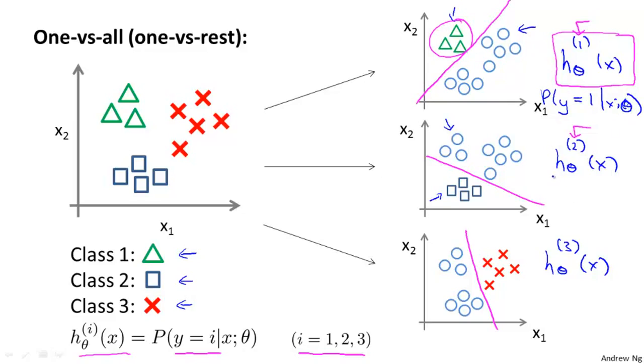And similarly, this is treating the square class as a positive class, and so it's trying to estimate the probability that y is equal to 2 and so on. So we now have three classifiers, each of which was trained to recognize one of the three classes.